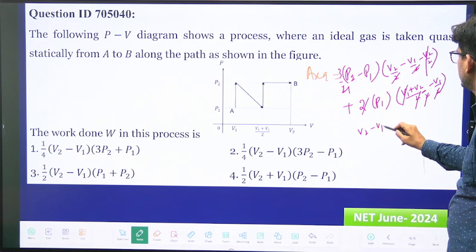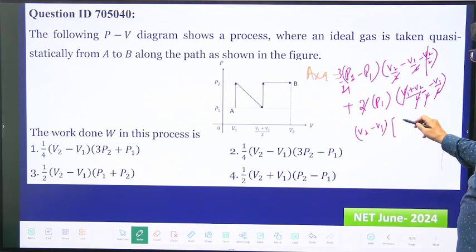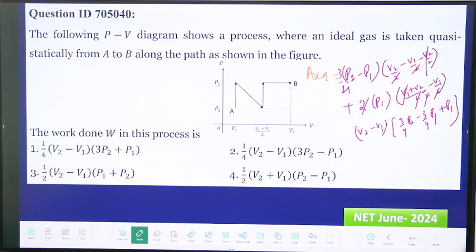So you can take v2 minus v1 common and it will become 3 by 4 p2 minus 3 by 4 p1 and plus p1, okay, so it will become...